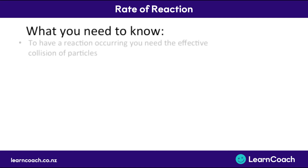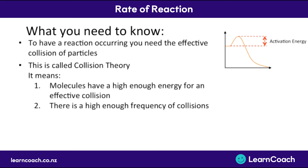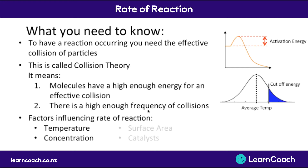So those are the four factors. To have a reaction occurring you need effective collision of particles — this is collision theory. This means that number one, molecules have a high enough energy for an effective collision, which is called the activation energy. And secondly, you need a high enough frequency of collisions. At a low temperature only a small number of reactants will have energy greater than the cutoff point, but if we increase the average temperature a whole bunch of reactants will have enough energy and reactions will occur.